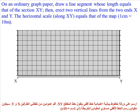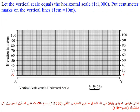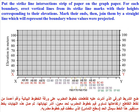On graph paper, draw a line segment equal in length to section line XY, then erect two vertical lines from ends X and Y. The horizontal scale equals the map scale (1 cm = 10 m); set the vertical scale equal to the horizontal scale (1:1000). Place centimeter marks on the vertical lines. Put the strike line intersections strip on the graph paper; for each boundary erect vertical lines with heights corresponding to their elevations, mark the ends, and join them with a straight line representing that boundary.